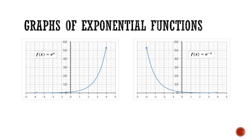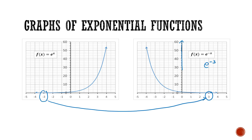What if we have e to the power of negative x? Looking at this function, we can see it's the mirror image of e to the power of x, flipped around the vertical axis. For instance, taking x equal to 3, we get e to the power of negative 3. Similarly, if x is equal to negative 2, we'd have e to the power of negative negative 2, or e to the power of positive 2 — giving the same f of x value as in the original graph. That explains why they are mirror images.